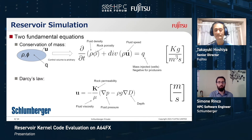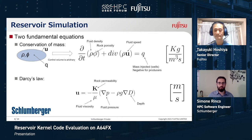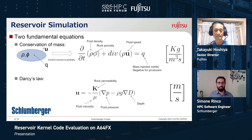A reservoir simulator is basically a software which solves a very complex mathematical model, but at the foundations of this model there are two very simple equations: the conservation of mass and Darcy's law. Both equations depend on the characteristics of both the fluid and the rock. For example, conservation of mass depends on the fluid density and the rock porosity, while Darcy's law depends on the rock permeability and the fluid viscosity. Darcy's law is a simple empirical law which describes how fluids move in porous media under the action of a driving force, typically pressure and gravity.